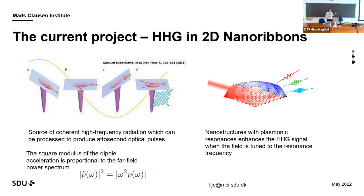Professor Joel Cox has been working a lot on this effect in graphene, in different graphene nanoribbons and nano-islands, and has shown that when you have confined systems with a well-defined plasmonic resonance, having the field exactly at the frequency of this plasmonic resonance really enhances the high harmonic generation. For quantifying this effect we use the dipole acceleration squared, which is proportional to the far-field power spectrum and resolves this feature very nicely.